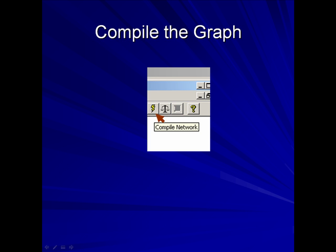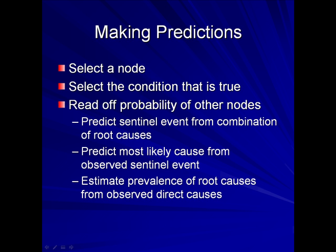To compile the graph, click on this icon. The causal model behind the root cause analysis can be used to predict the probability of the sentinel event, and this probability can be compared to the intuitions of the investigative team. The probability of the sentinel event can be calculated from each of the direct causes, and the probability of each direct cause can be calculated from their root causes.